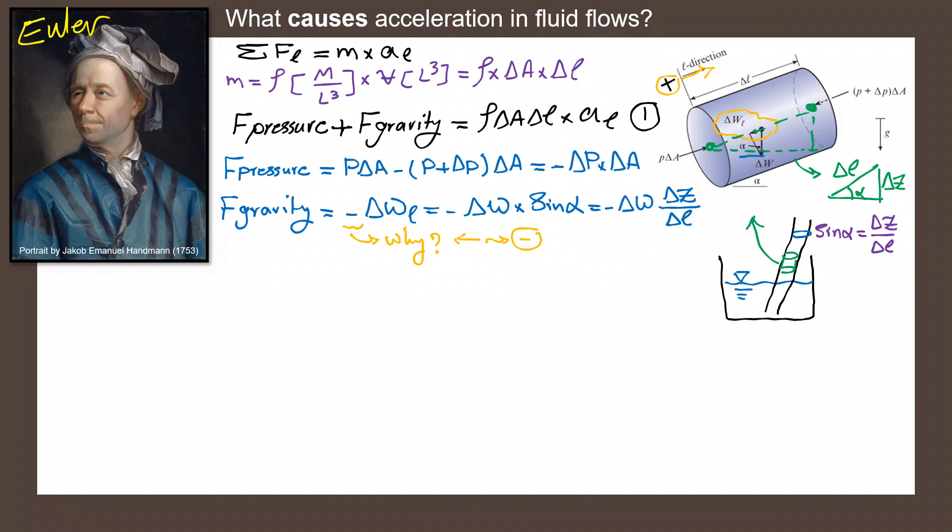So now the only thing that I need to do is to put all of these inside my equation number one. So if I rewrite equation number one over here, and putting all of the values that I calculated inside that, it would be negative ΔP times ΔA, negative ΔW times ΔZ divided by ΔL. It would be equal to ρΔAΔL times acceleration in direction of L.